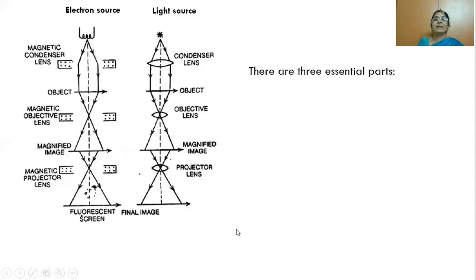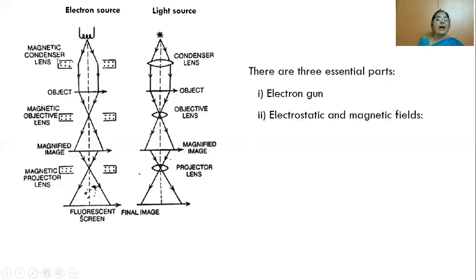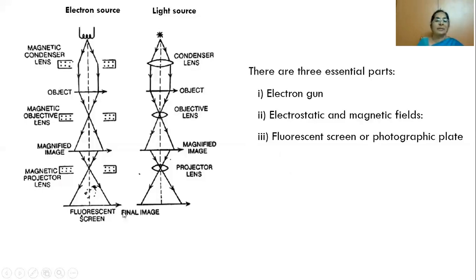The electron microscope has three essential parts. The first is the electron gun. The second is magnetic fields which act as lenses — either magnetic fields or electric fields can be used for this purpose. The third essential part is a fluorescent screen or a photographic plate.